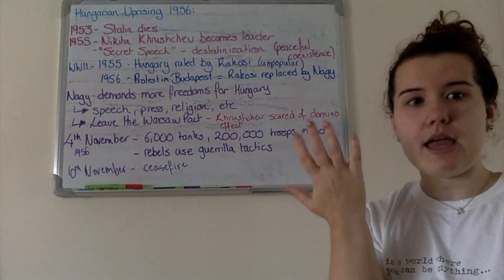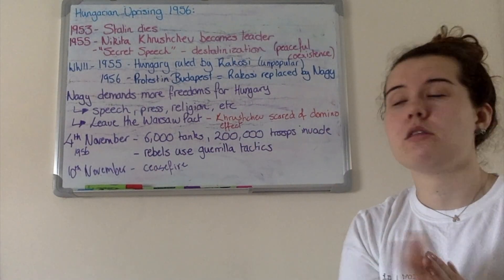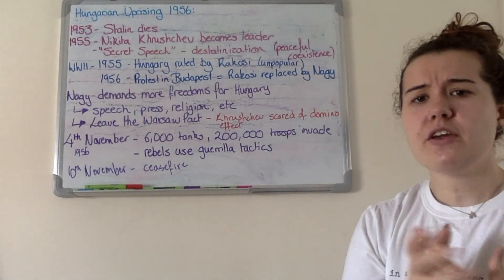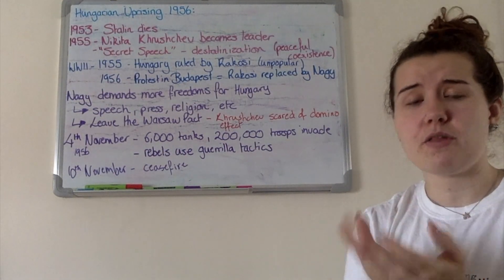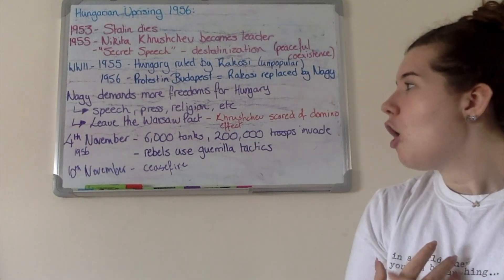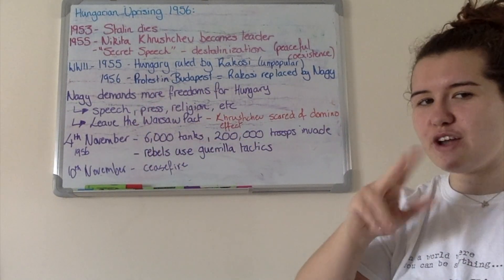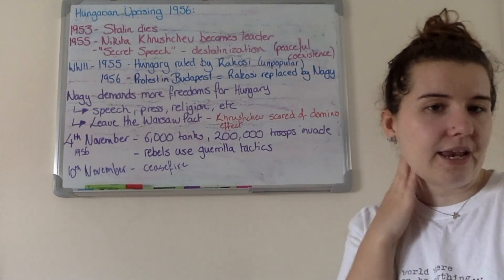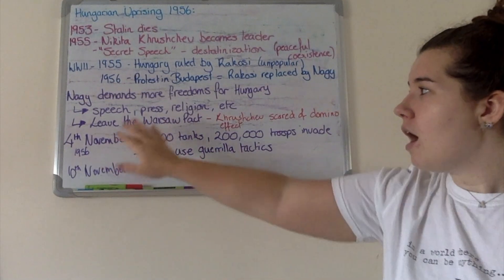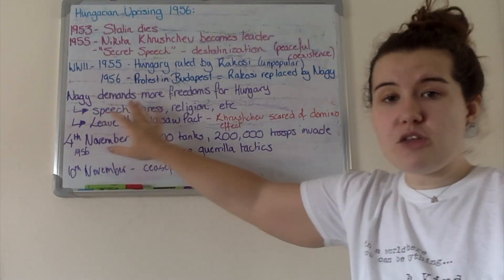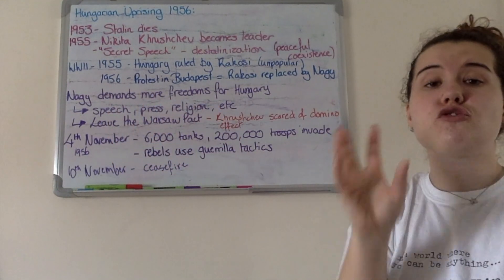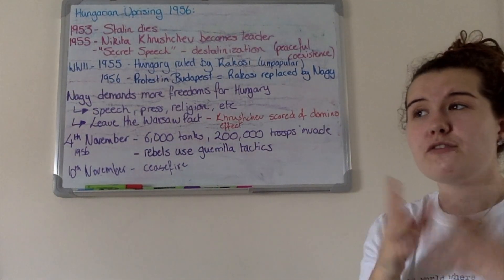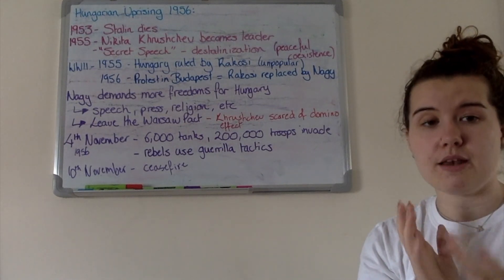Nagy is a well-liked communist, much more liberal in his views. The Soviet Union did see him as a loyal person, because they would never have appointed him otherwise. When he gets into power, he starts to test the waters and see how much freedom Khrushchev is bringing in with de-Stalinisation — how far can he go? He wants freedom of speech, of press, of religion, of travel. He wants to see how far Hungary can go and have a little bit more of these freedoms that they enjoyed pre the Nazi invasion.